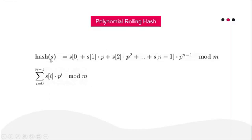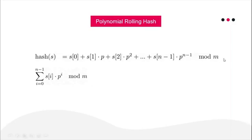Polynomial rolling hash works like this: the hash value is the 0th character times p raised to power 0, plus the 1st character times p raised to power 1, and so on, up to the (n-1)th character times p raised to power (n-1), all modulo m. For now, ignore the modulo m — I'll explain why we need it. This whole expression is your polynomial hash function.